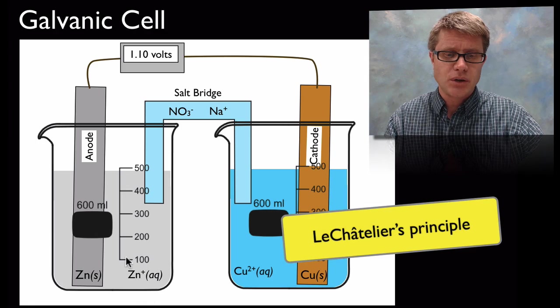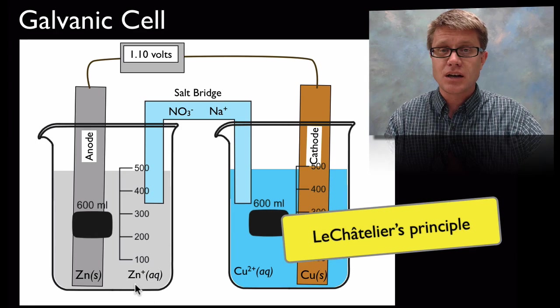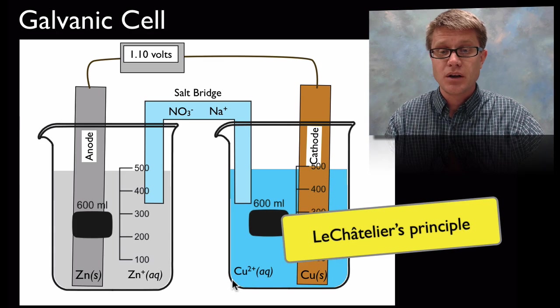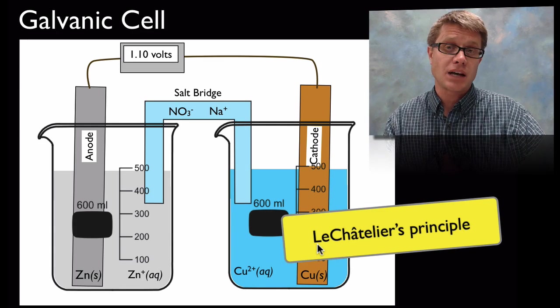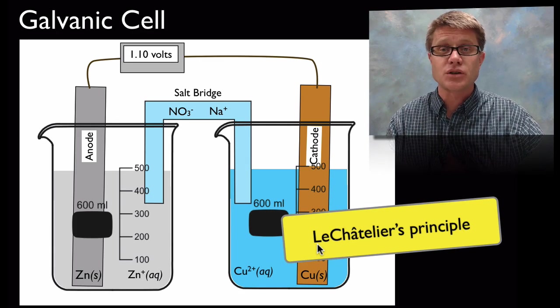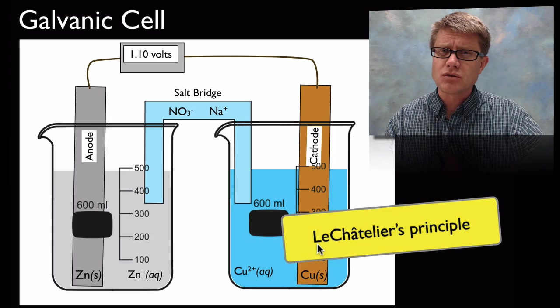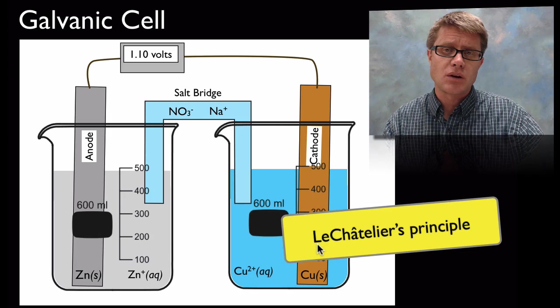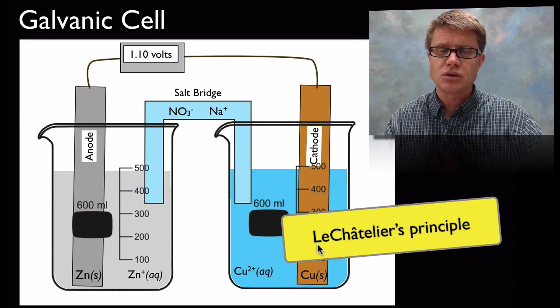So what would happen for example if we increase the amount of zinc in this solution? That would slow this reaction. Or if we were to increase the amount of copper it's going to speed up this reaction. What happens if we increase the temperature? That's going to speed up the chemistry. It's going to speed up this reaction and it's going to be quicker. In other words we're going to generate more volts than we would if it was at a cold temperature.